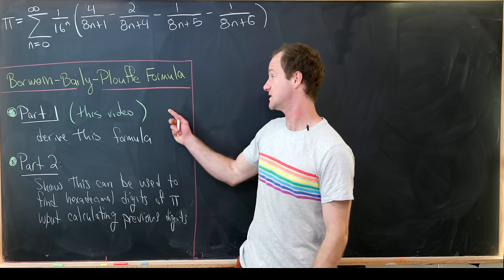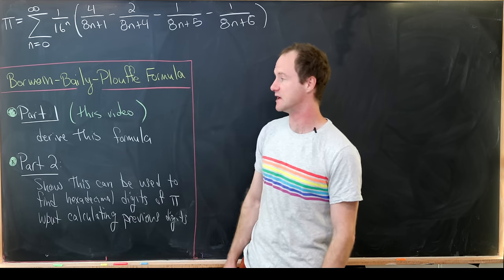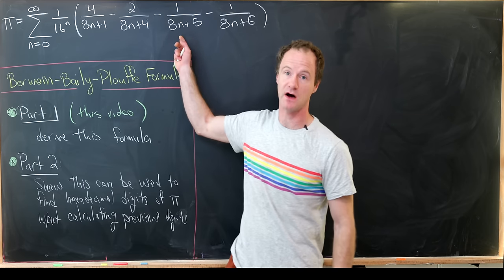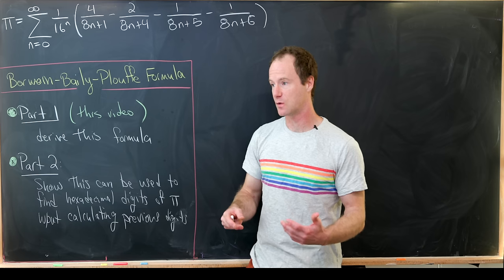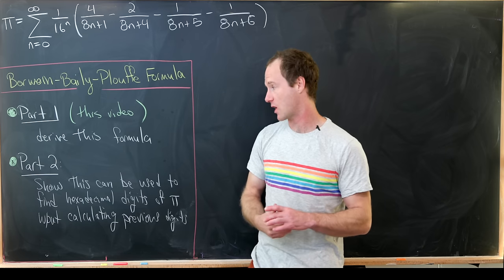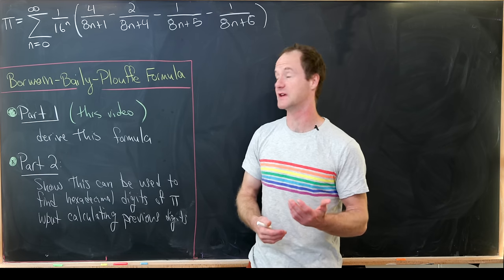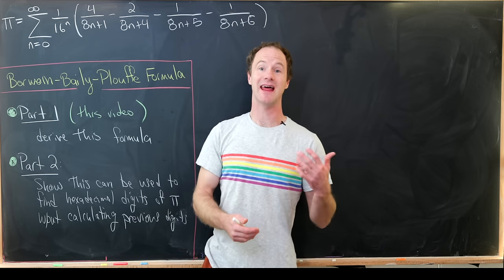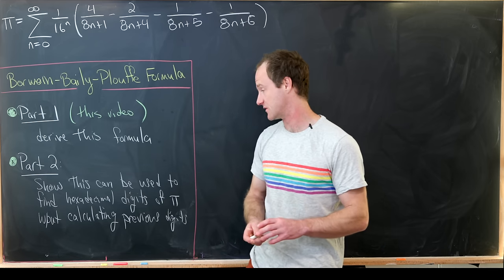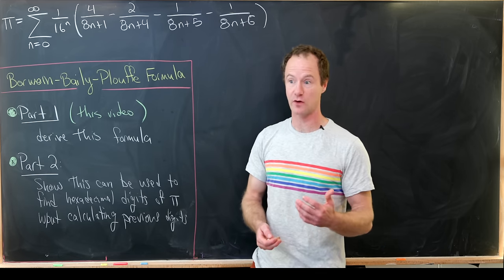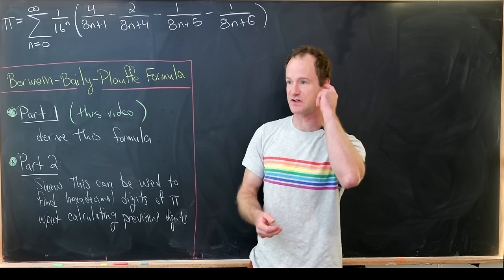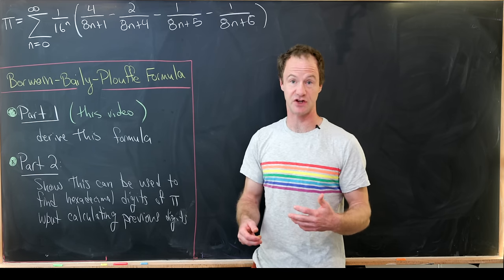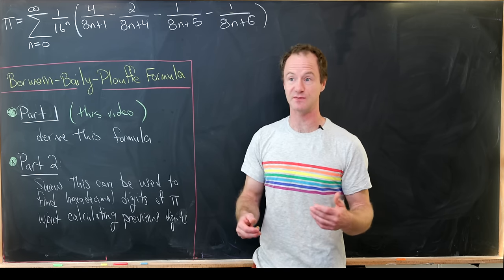This is going to be split into two videos. In this video, we'll derive the formula which I've written above. And in the second video, we're going to explore a really interesting property of this formula, which allows us to calculate hexadecimal digits of pi without calculating all previous digits. For example, you could find the hundredth digit without finding any of the ones before it.